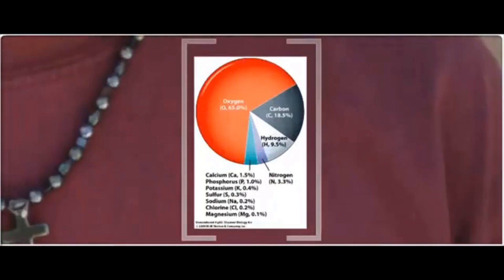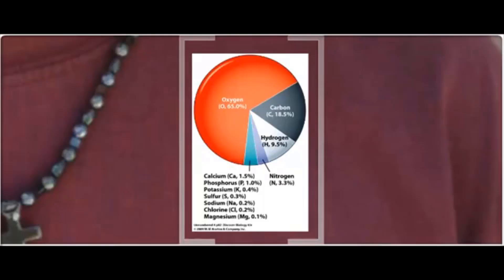When we look at the mass of the human body broken up by element, we see that only 4 elements make up 96% of the mass of the human body. Those elements are oxygen, carbon, hydrogen, and nitrogen,